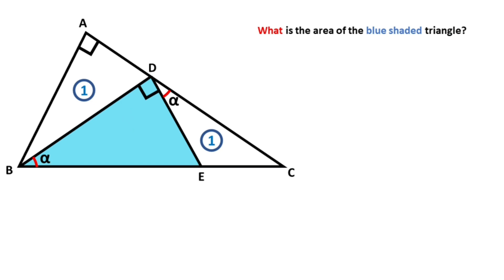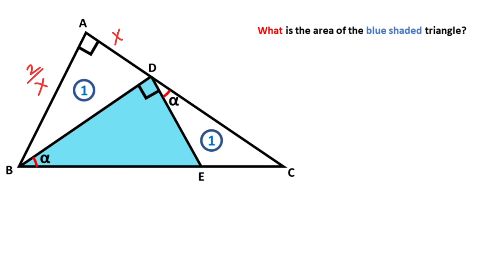First step: let's call this length x. That means this length must be equal to 2 over x, because the area of the triangle equals one unit square. Next step, let's call this angle theta.